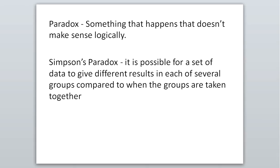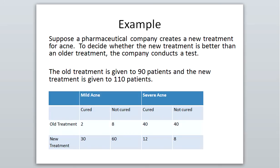Let's look at an example. Suppose a pharmaceutical company creates a new treatment for acne. To decide whether the new treatment is better than an older treatment, the company conducts a test. The old treatment is given to 90 patients and the new treatment is given to 110 patients. Looking at our chart showing people with mild acne: two were cured with the old treatment and 30 were cured with the new treatment, and then eight were not cured with the old and 60 were not cured with the new.